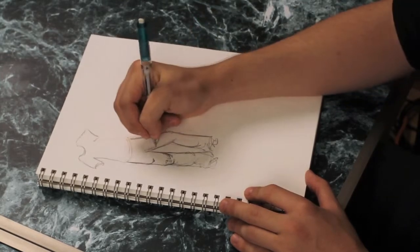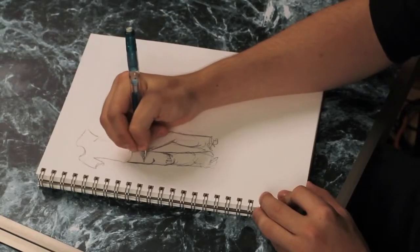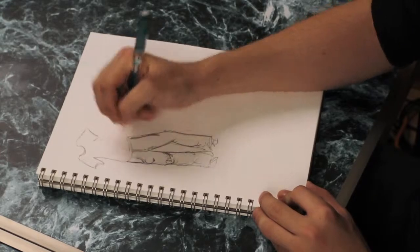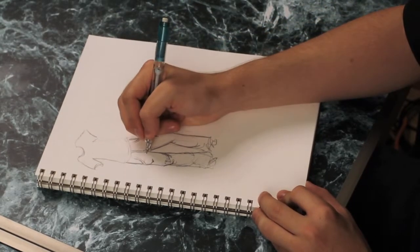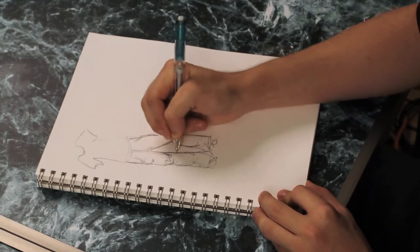So once you have the general shape of the jeans plotted out, you can add in things like the zipper coming down or the pockets. A common thing for jeans too is also to have the seam line following the leg.